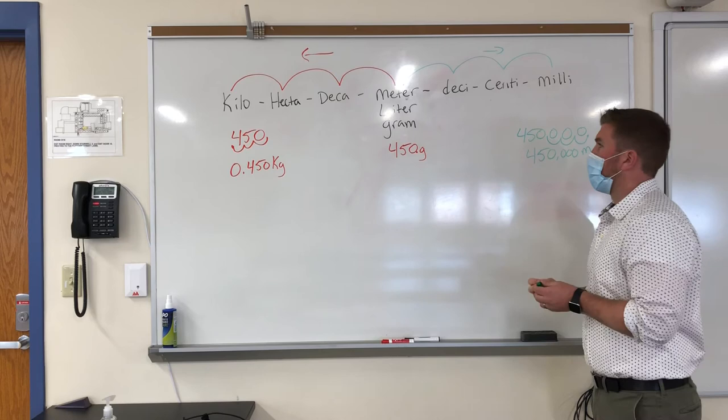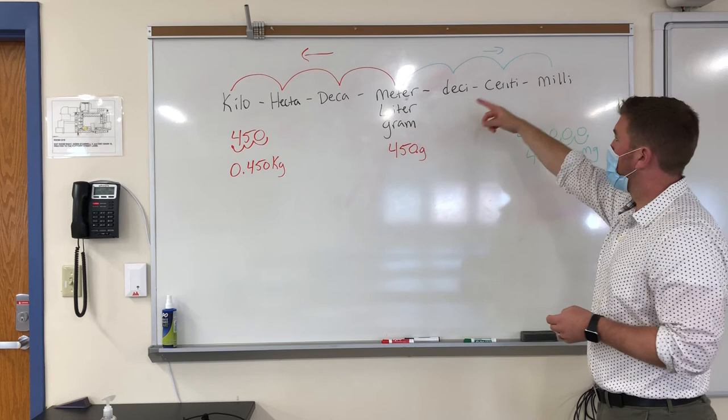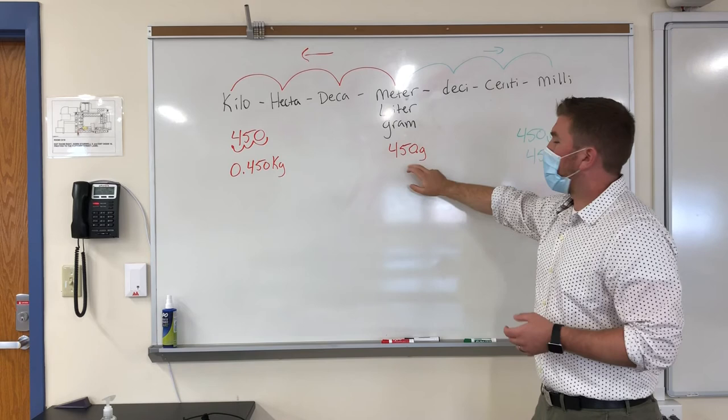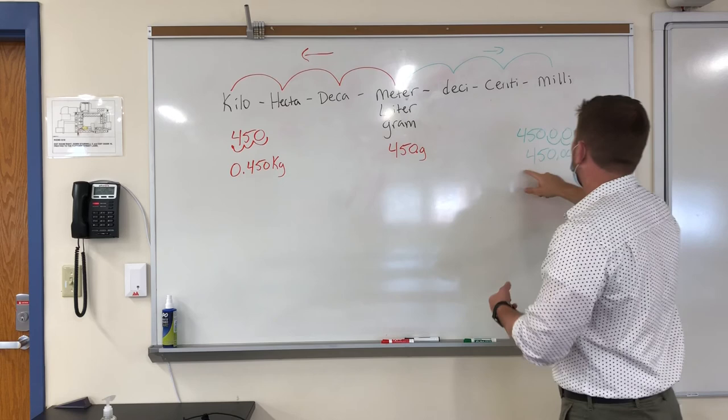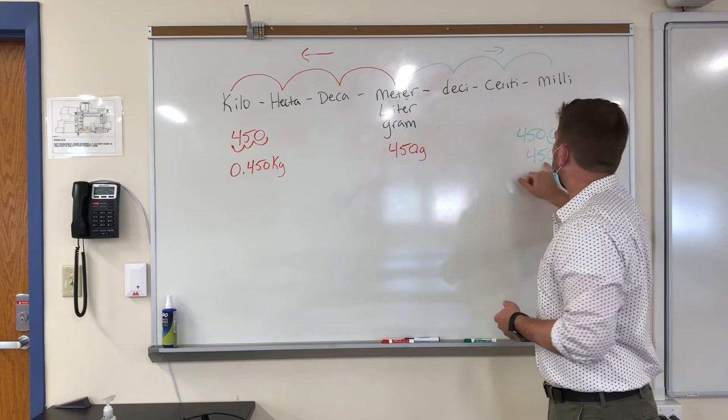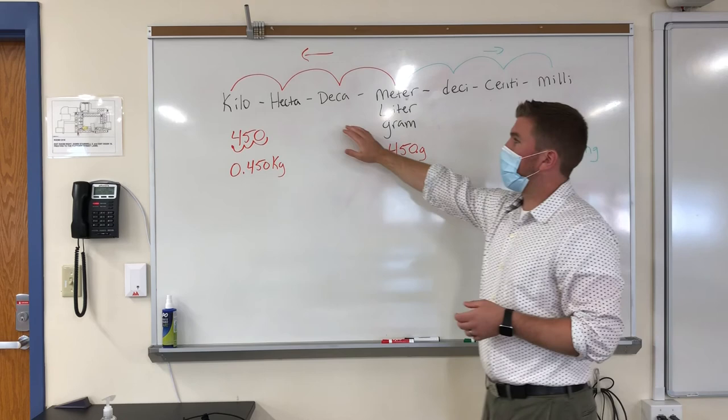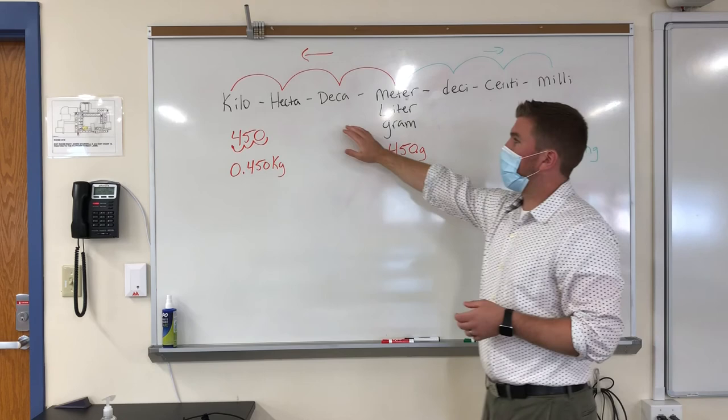What you should notice here: first, the direction you move along the continuum is also the direction you move the decimal. Second, you start to get an idea of how big certain things are. A kilogram, kilometer, or kiloliter — they're bigger. As you go the other way, it takes more units to have the equivalent number, because those units are smaller. Keep in mind all of the prefixes, the order they go in, and whether you're going right or left along the line so you can figure out where to move the decimal.